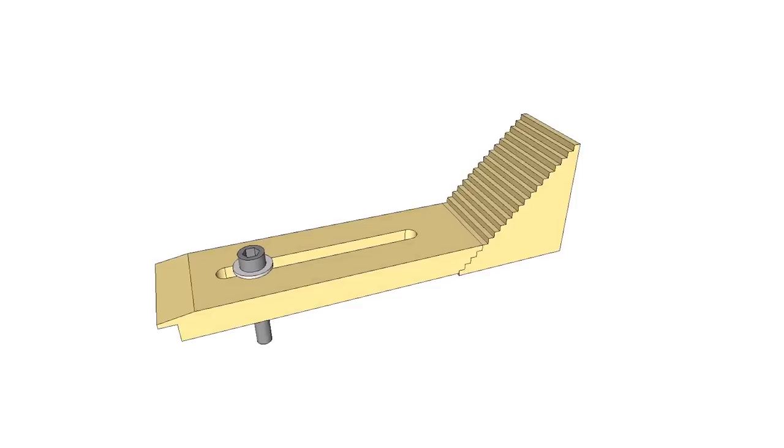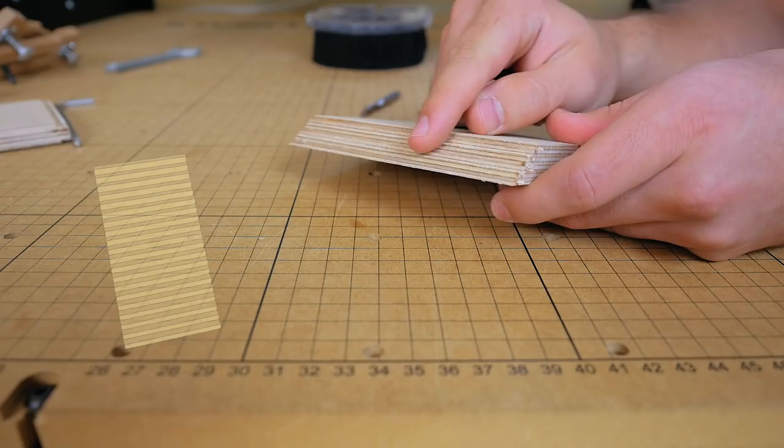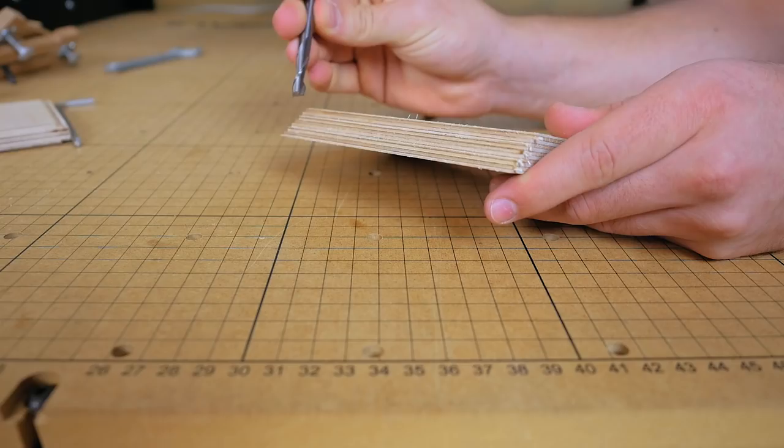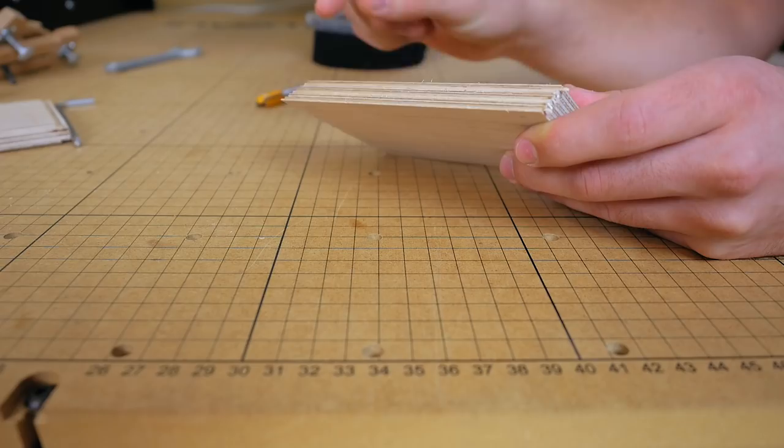First I need to make these stair ramps. I made a couple test pieces with plywood and a spiral upcut bit, but that ended in terrible tear out. Then I tried a straight bit and it came out much better but still not really usable.